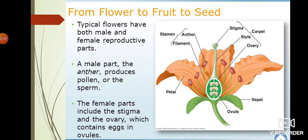The outer colorful part is called petals. That green color part is called sepal. Inside that we have male and female reproductive parts. Male reproductive parts are anther and filament. The anther can produce pollen grains. The female reproductive part is called carpel. Carpel consists of stigma, style and ovary. Male reproductive part is called stamen, which consists of filament and anther.